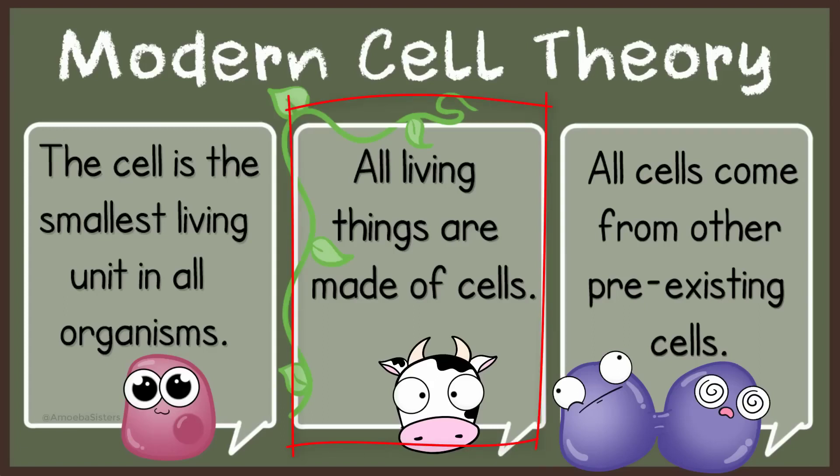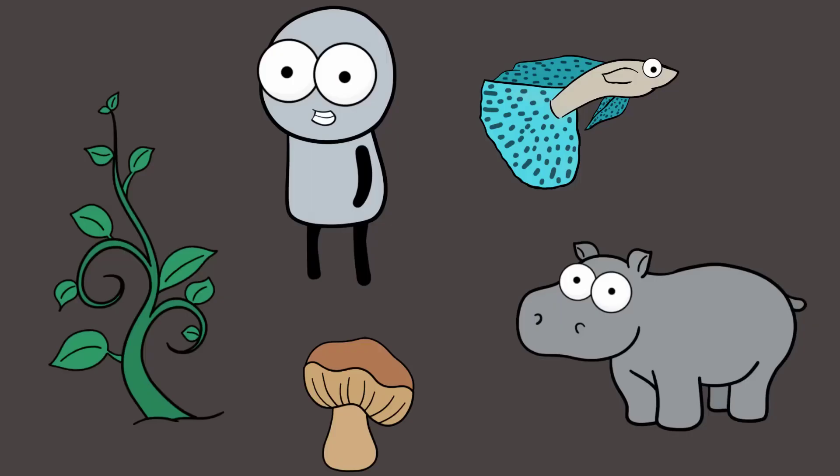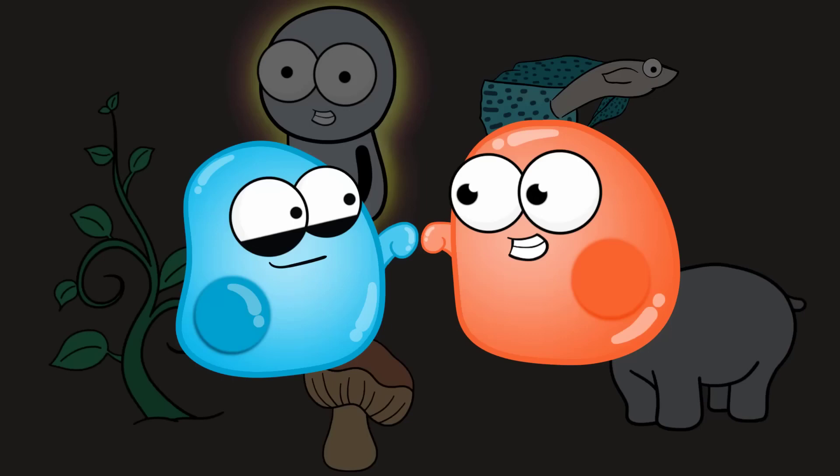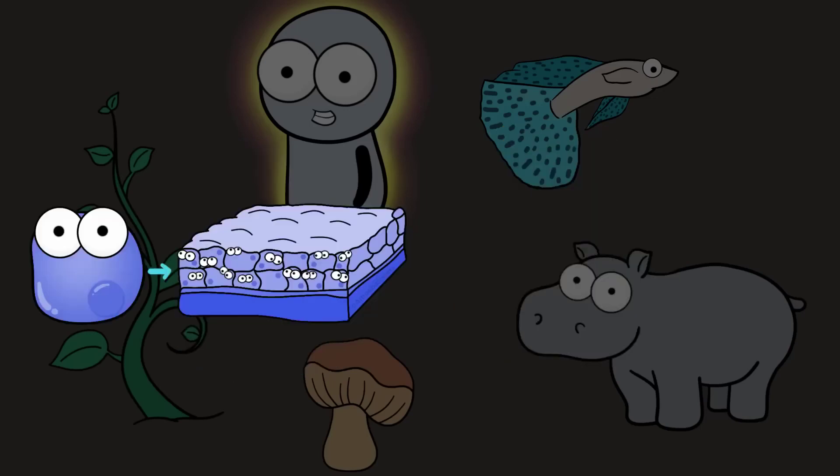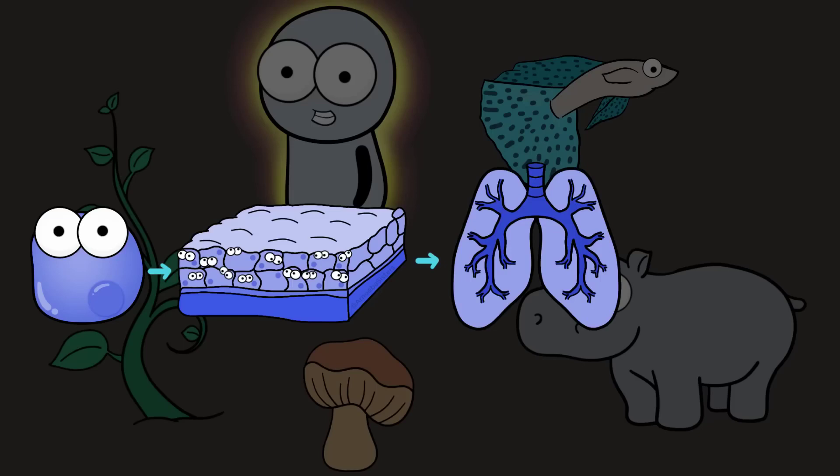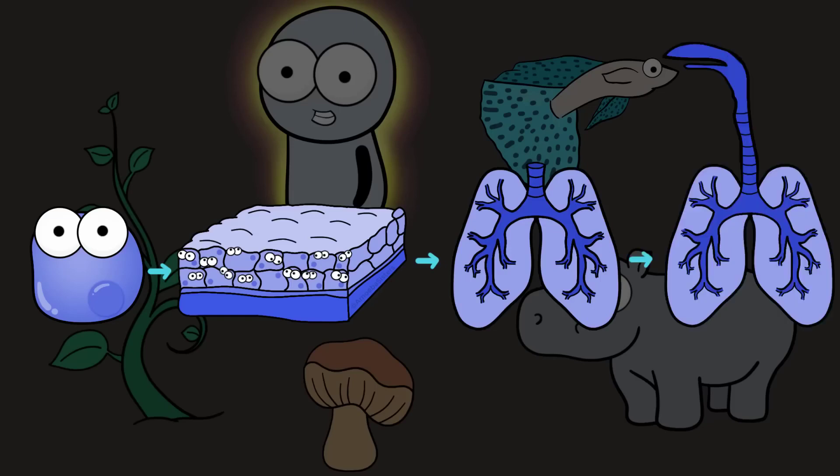All living things are made of one or more cells. Many multicellular organisms like you have cells that work together, working together as part of a body tissue, body tissues working together as part of an organ, organs working together as part of an organ system. Your cells are specialized to work in these different levels of organization.